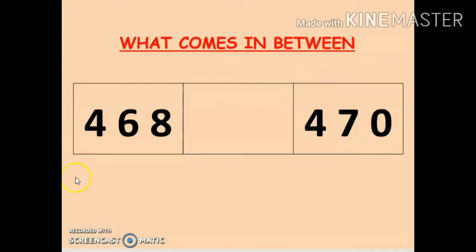Here I have written two numbers: 468 and 470. I have left one box in between, and the question is what comes in between. It's very very easy — you just have to fill in the missing number. Start counting from 468: 468, 469, and the third number is 470. So the answer is 469, or we can say that 469 is in between 468 and 470.